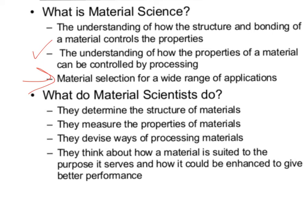So this is what material scientists do. They start by determining the structure of the materials they're working with at the molecule and atom level. They measure those properties — and we'll be learning some lab techniques for how you measure the properties of matter. Then they devise ways of processing those materials, like how long should we let our concrete sit, or how much water should we add. And then they think about how a material is useful, how it's suited to its purpose, and how they can enhance it for better performance.